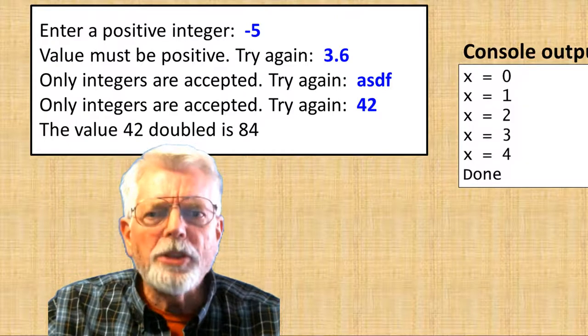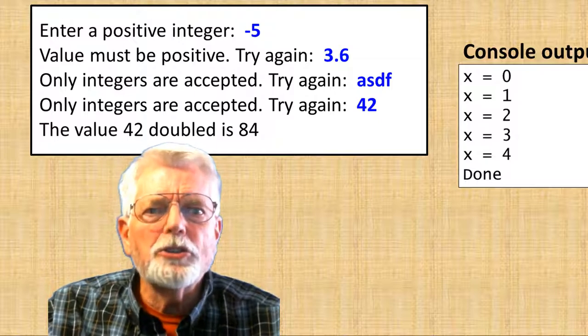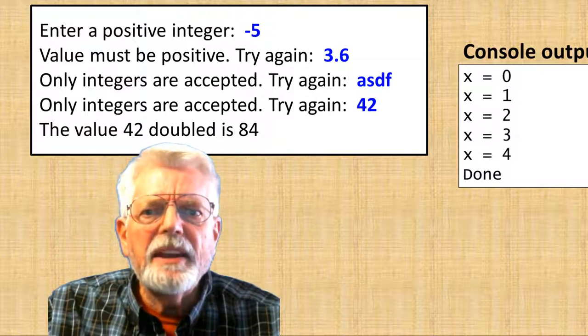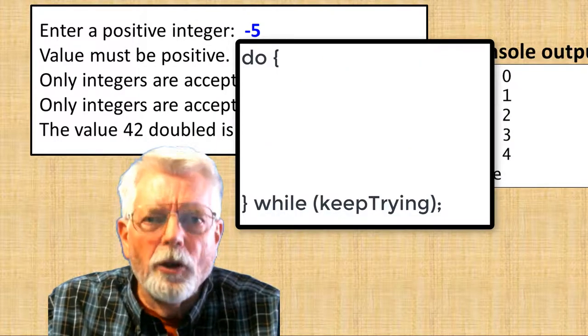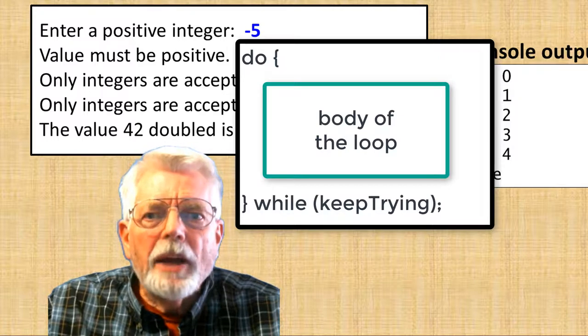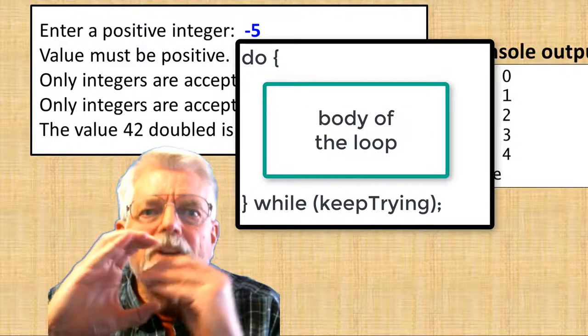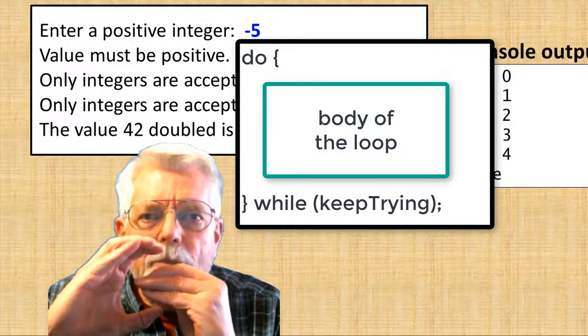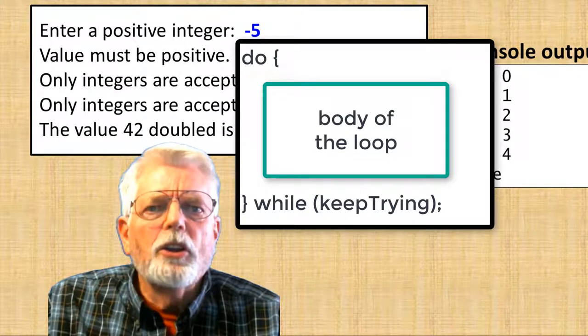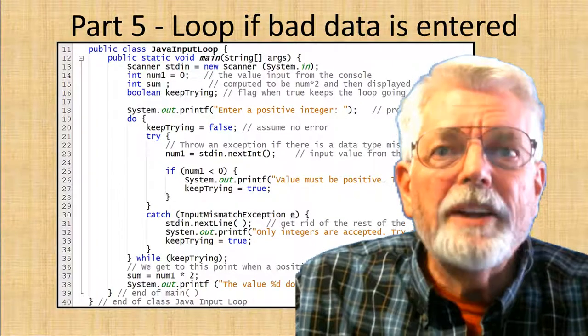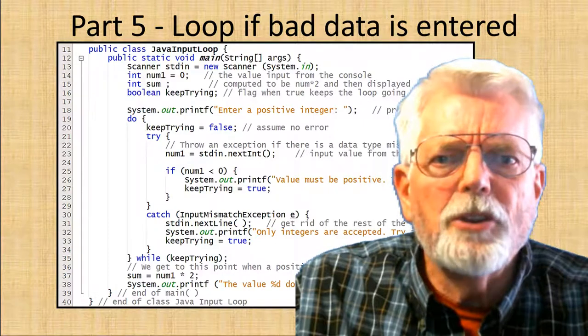I want the program to display an error message and ask for the input again as long as the user is typing in negative numbers or non-integer values. I am going to do this by using a do-while loop. Inside the body of the do-while loop, I am going to place all of the code that does the console input, test for invalid values, and associated error messages. I will make the program continue to loop until good data is entered.